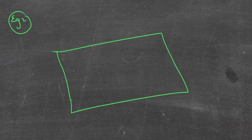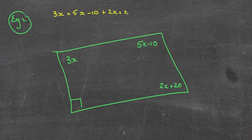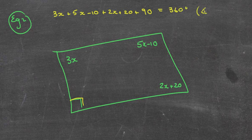Let's look at example two — a bit more complex. I'm going to label the angles as 3x, 5x minus 10, 2x plus 20, and — remember that's a 90-degree angle — so plus 90. So I've added all four angles together and they equal 360 degrees because it's the angle sum of a quadrilateral.